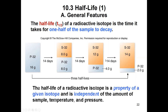The half-life of a radioactive isotope is a property of a given isotope, so every isotope has a different half-life. It can be very long or very short. What is important is that this half-life is independent of the amount of the sample — it doesn't matter how much you start with; half will decay over the time given for the half-life of an isotope. It is also independent of temperature and pressure.